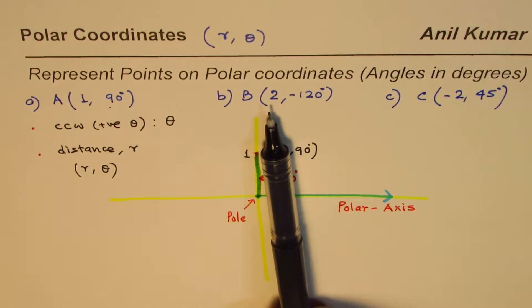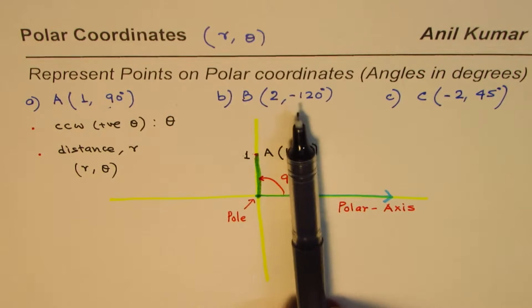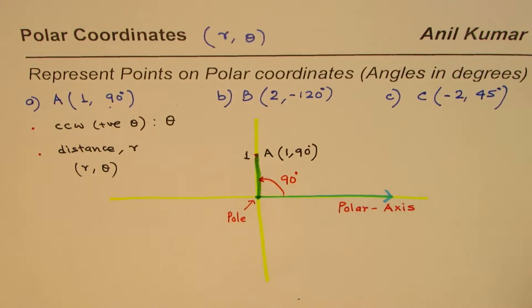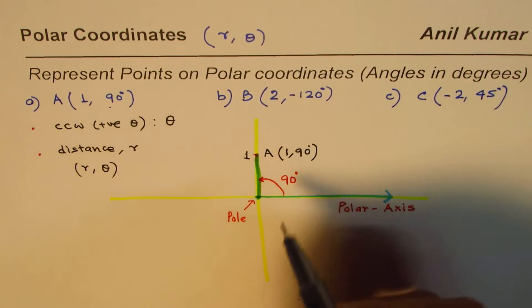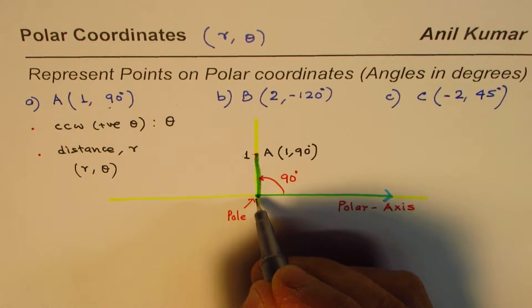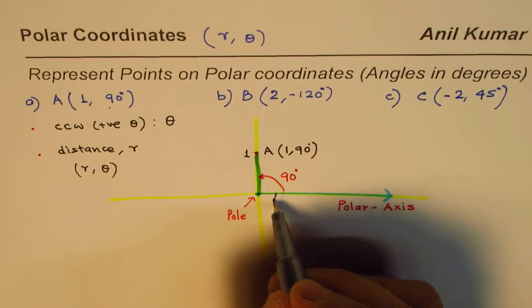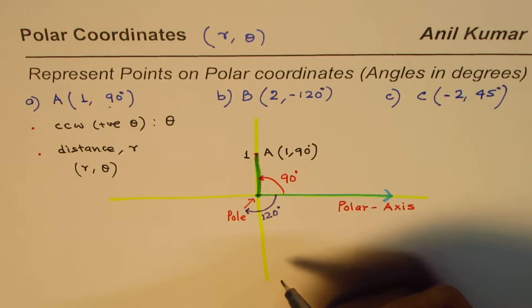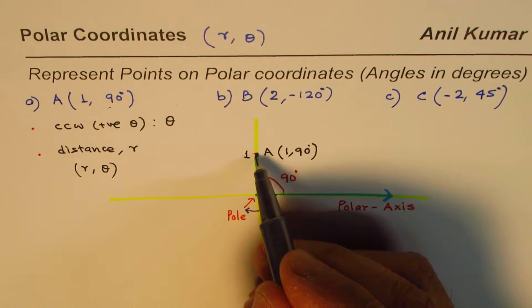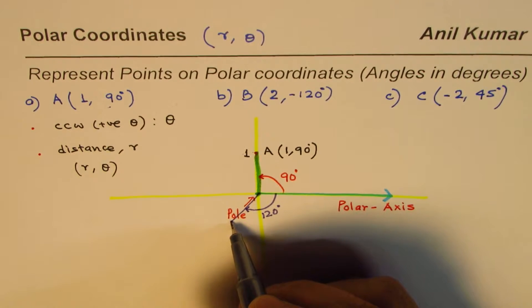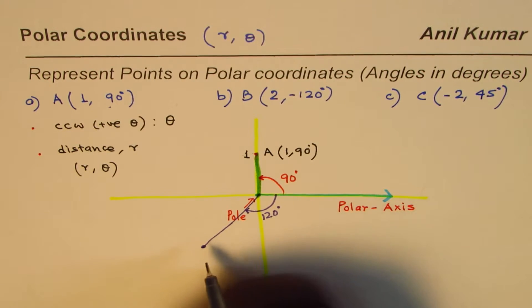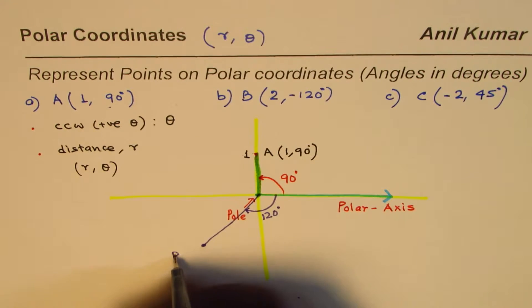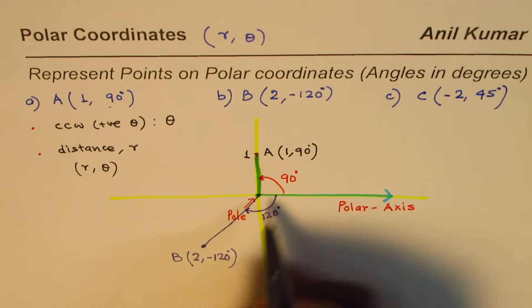Now point B is (2, -120°). Negative means clockwise direction, so we move clockwise to 120 degrees — that's 90 plus 30 degrees from the polar axis. Two units out gives us the second circle. So this is my coordinate point B, written as (2, -120°). Just with one axis and a pole we are able to represent all our points.